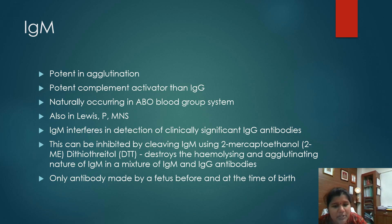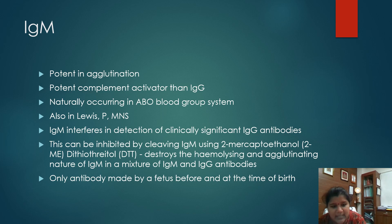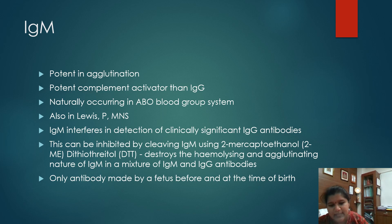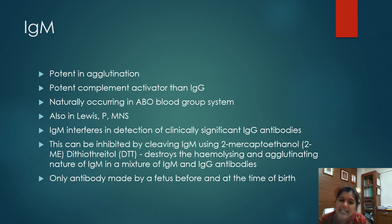IgM interferes with the detection of clinically significant IgG antibodies — they may be present as a mixture of both IgM and IgG, disturbing the identification of IgG. To eliminate IgM from the mixture, it can be cleaved using 2-mercaptoethanol and dithiothreitol, which destroys the agglutinating IgM, leaving only IgG for detection. IgM is the only antibody that can be made by a fetus before and at the time of birth. So if a fetus has IgG, that indicates the IgG has crossed the placenta and actually belongs to the mother.